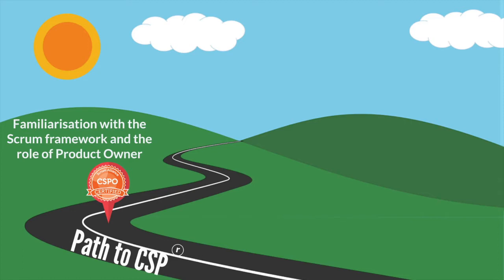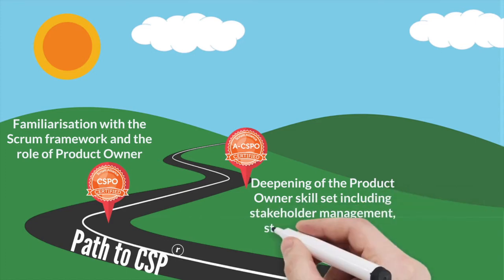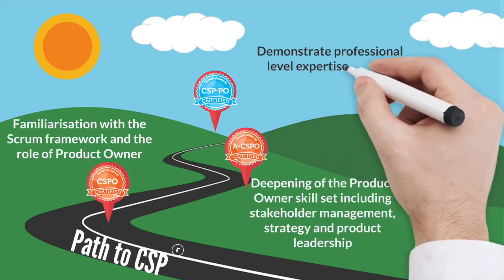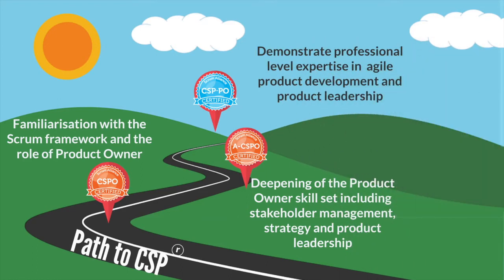The second step is the Advanced CSPO, which deepens the product owner skill set with topics like road mapping, stakeholder management, and product leadership. The ACSPO then enables people, if they want to, to move on to the Certified Scrum Professional level, which is quickly becoming the benchmark of professional level product mastery within the industry.